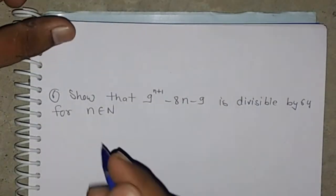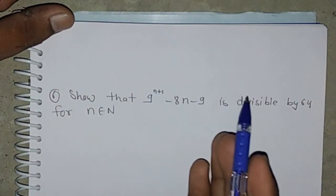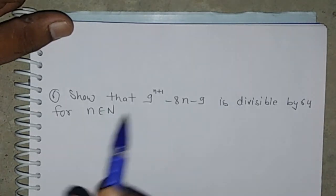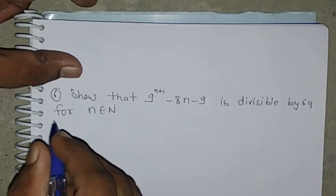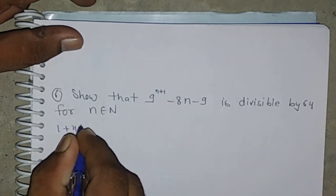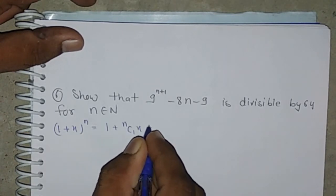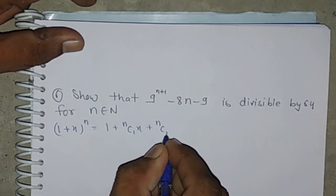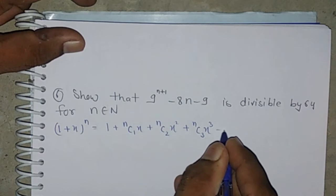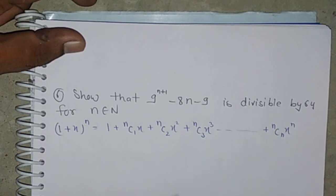Using the Binomial Theorem, we have to prove that 9 to the power n plus 1 minus 8n minus 9 is divisible by 64 for all values of n. Firstly, we know the formula: 1 plus x to the power n equals 1 plus nC1·x plus nC2·x squared plus nC3·x cubed plus ... plus nCn·x to the power n.